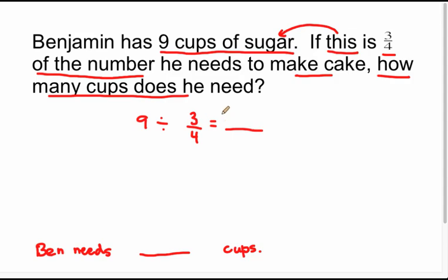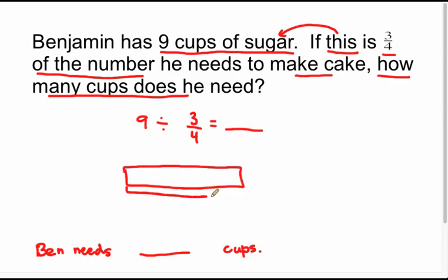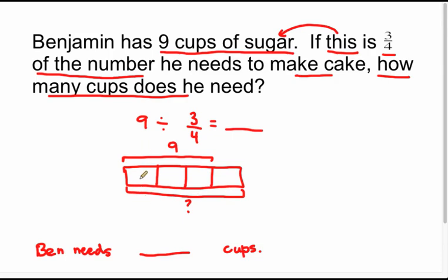Saying three-fourths of some number that I don't know yet is nine. So let me draw what that number is that I don't know yet and label it. I now need to partition that number into four equal parts, because that's what the denominator tells me.